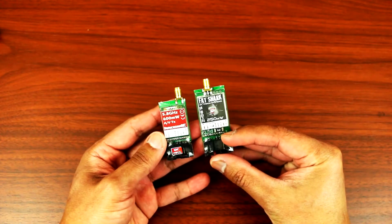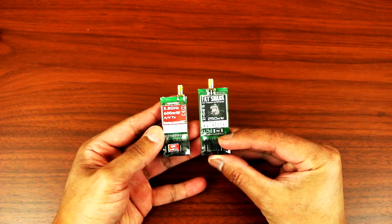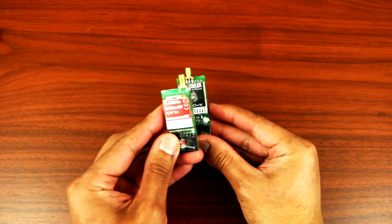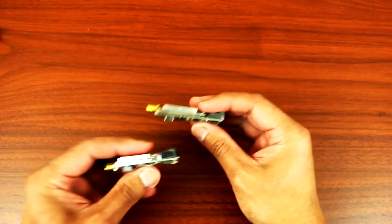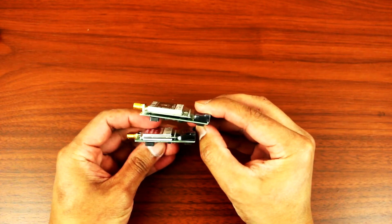Here they are side by side. As you can see, the Emerson is a little bit smaller in length and width as well. Thickness-wise, almost identical.